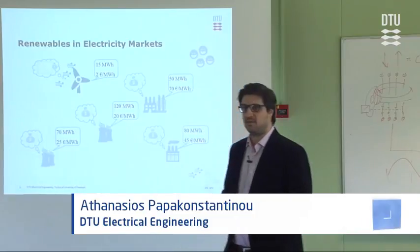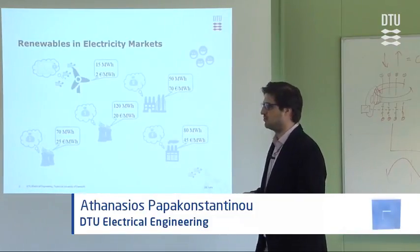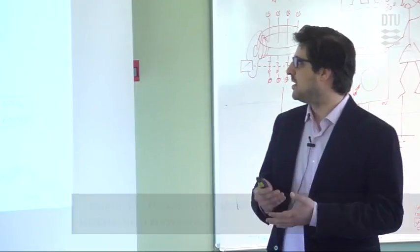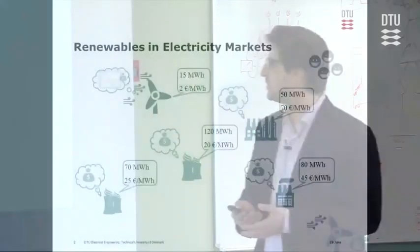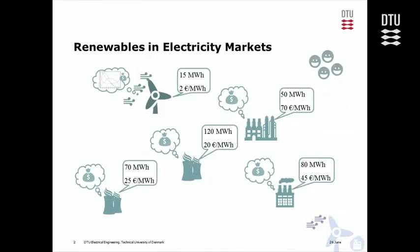Electricity markets have been designed with a heavy focus on conventional power generators. Producers participate by bidding their marginal costs, which depend on fuel prices. They're ranked from cheapest to most expensive, with the clearing price determined at the intersection of supply and demand.